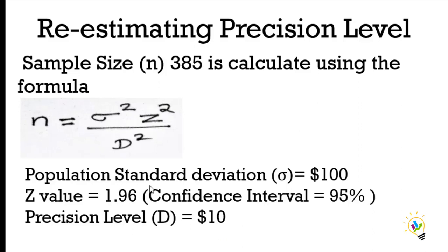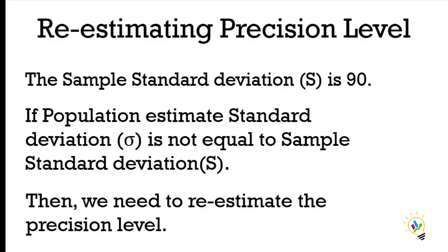The population standard deviation may not be the actual value — it is an assumed estimation taken as 100. After the sample size is determined, collect the data and calculate the sample standard deviation. For example, if the sample standard deviation is 90, and the population estimated standard deviation (100) is not equal to the sample standard deviation (90), then we need to re-estimate the precision level.